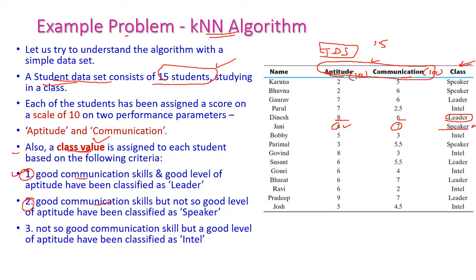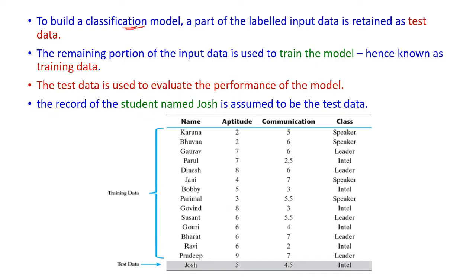If aptitude is good but communication is not up to the level, then the student is called 'Intel.' To build the classification model, test data is very important. Here, one student named Jos will be used as test data, while all other student data will be used as training data. The test data is used to evaluate the performance of the model.